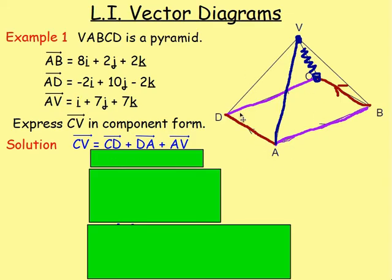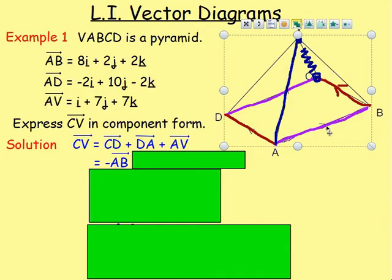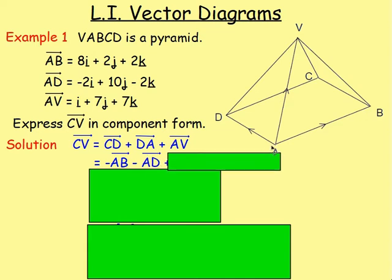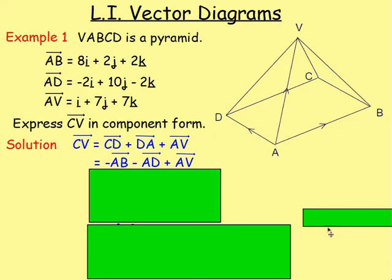Think about those vectors for this journey: going from C to D to A up to V. From C to D, that is the same as negative AB — so AB is going in that direction and we're going the negative direction. From D to A, that's the same as negative AD, because AD goes in the forward direction. And then this vector AV just stays as AV.